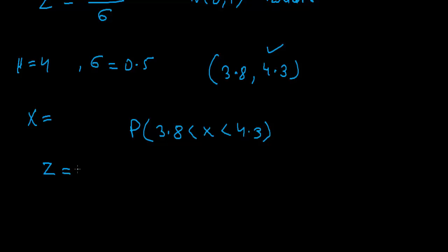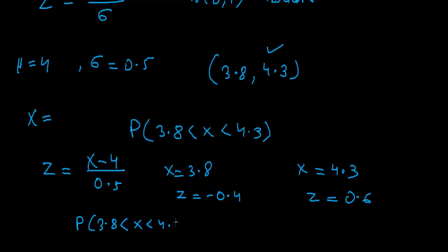Z we assume. Assume that Z has standard normal distribution with X minus Mu upon Sigma. Now we will find the values. When we put X equals to 3.8, our Z will turn out to be minus 0.40. When X equals to 4.3, our Z will be 0.6. What we see is that our probability has changed to this. P of 3.8 less than X less than 4.3. This probability has resulted to this transformation.